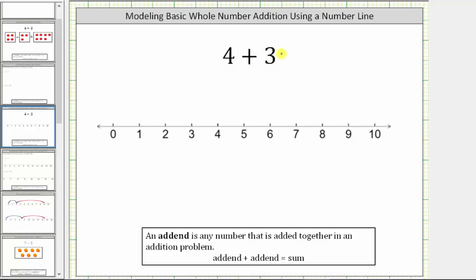We want to determine four plus three using a number line, or determine the sum of four and three. For review, remember four and three are called addends, and the result of the addition is called the sum.